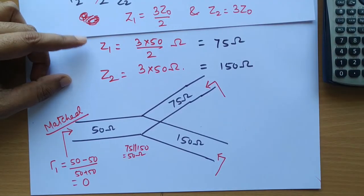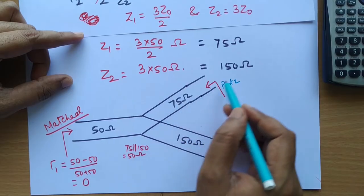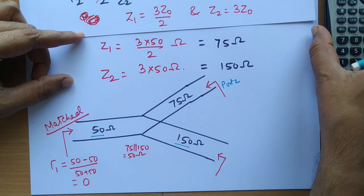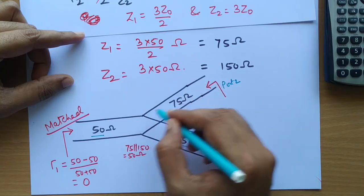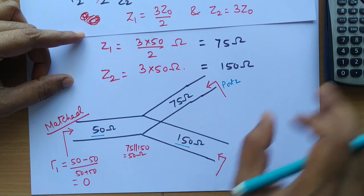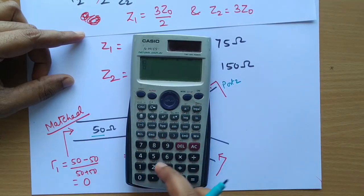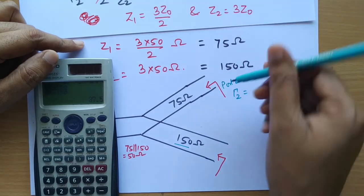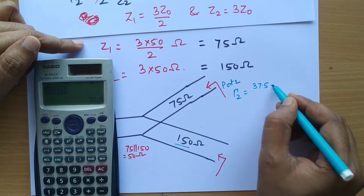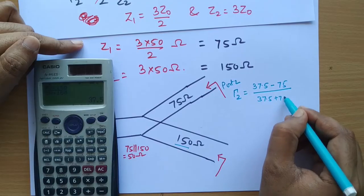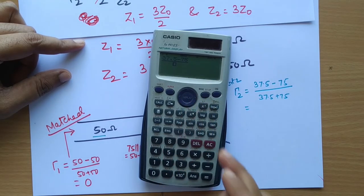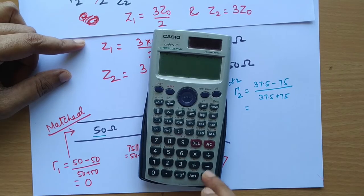Now for port 2: the characteristic impedance is 75 ohms, and the load is the parallel combination of 50 ohms and 150 ohms. That gives (50×150)/(50+150) = 37.5 ohms. The reflection coefficient is (37.5 − 75)/(37.5 + 75) = −37.5/112.5 = −1/3. So port 2 is mismatched.